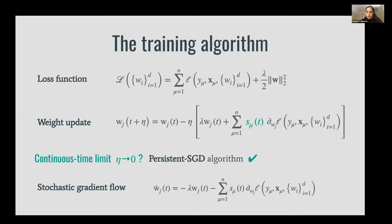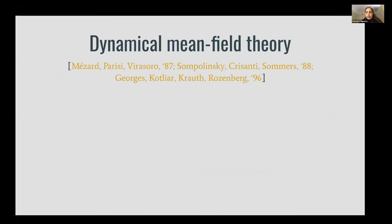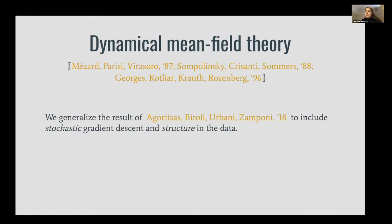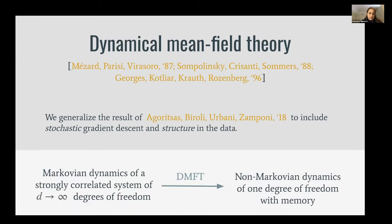At variance with the usual SGD algorithm, each sample stays in the training mini-batch for a characteristic time tau. With this definition, we can write the update in continuous time, and we call this equation a stochastic gradient flow. To track the dynamics of the weight vector, we use dynamical mean field theory from statistical physics. In particular, we generalize the results of Agorizzi, Biroli, Urbani, and Zamponi from 2018.